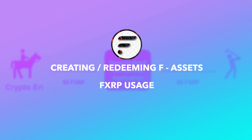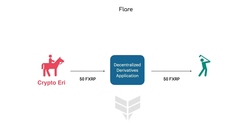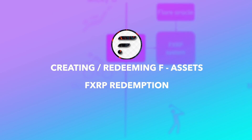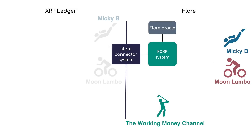FXRP usage. Eddy uses her FXRP on Flare Finance's Flare Loans application to loan 50 FXRP to the Working Money channel. FXRP redemption for XRP: the Working Money channel wishes to redeem his FXRP for XRP. He sends his FXRP back to the FXRP system along with the XRP address he wishes to receive the XRP and his Flare address to credit in Spark in case of redemption failure. Once his transaction is completed, the agents are sent an agent redemption formula specifying the transaction they need to make on the XRP ledger and the ledger index deadline.